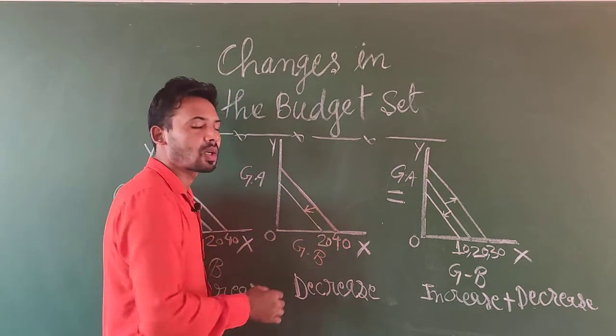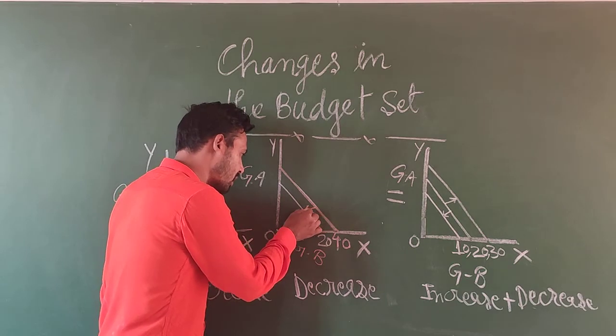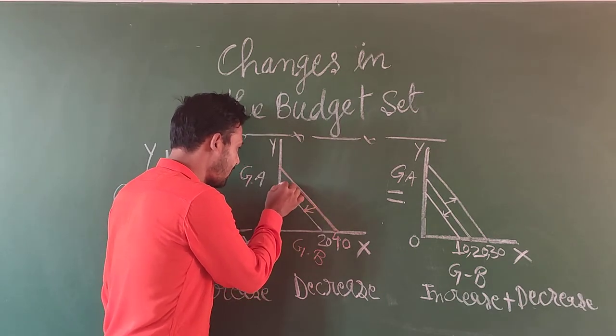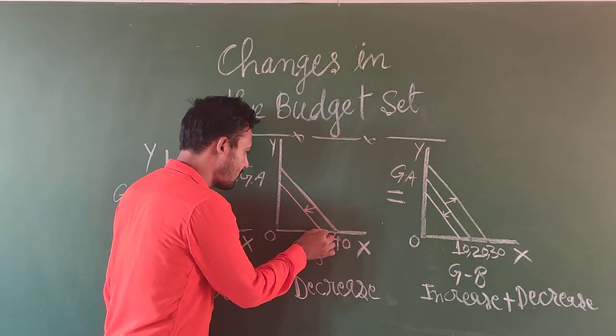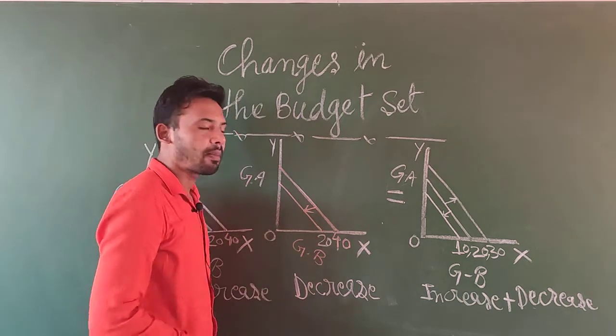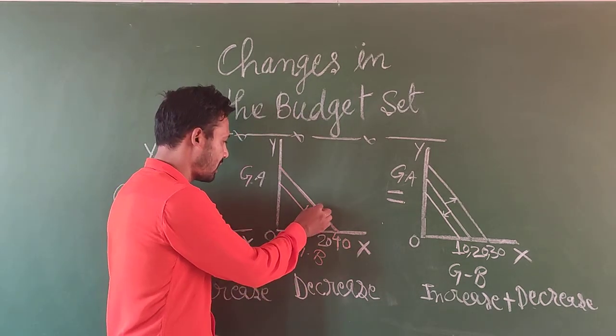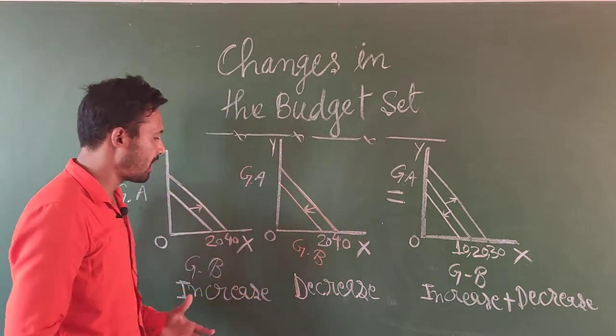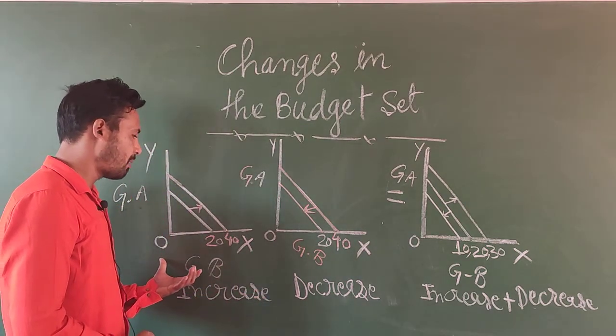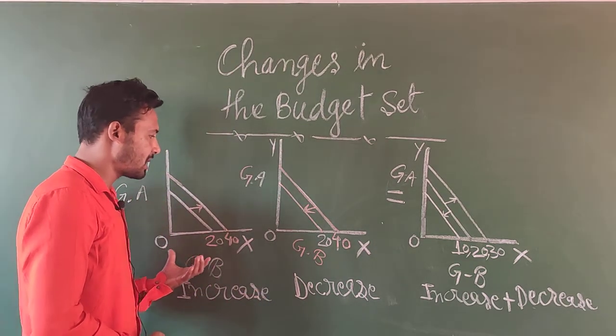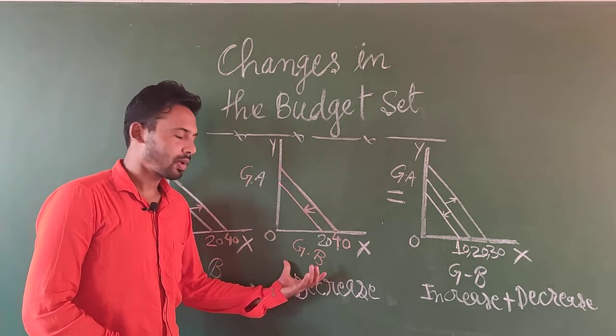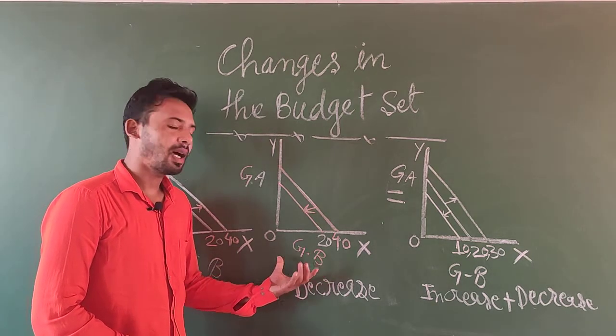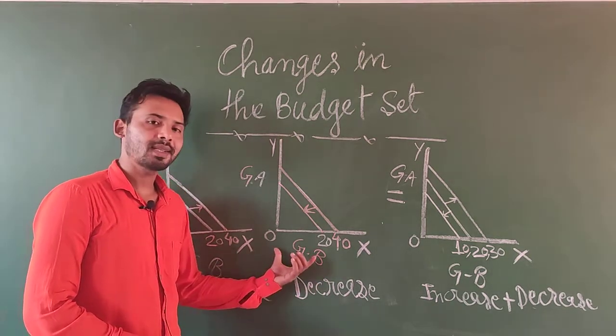The budget line is moving inward. It is just parallel to the original budget line but it is moving inward inside. This graph is showing decrease in our budget or budget line.